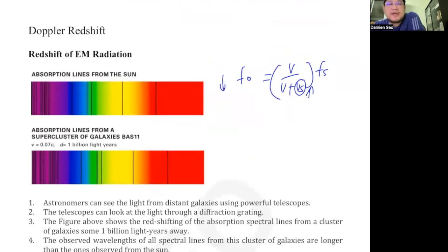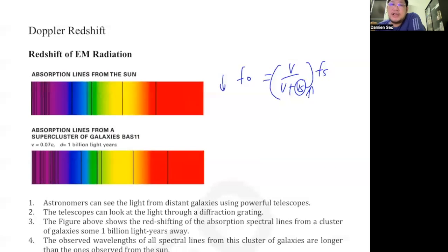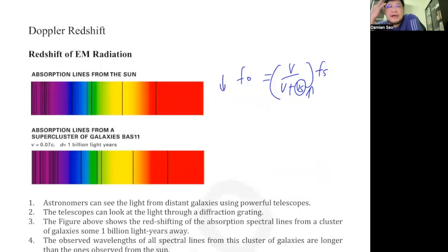One is the Doppler redshift. If you remember the Doppler effect from AS, the Doppler effect is basically when the source is moving towards us or away from us — we are the observer — the frequency that we observe will change. If the source is moving away from us, the frequency will be lower; if it's coming towards us, the frequency will be higher.